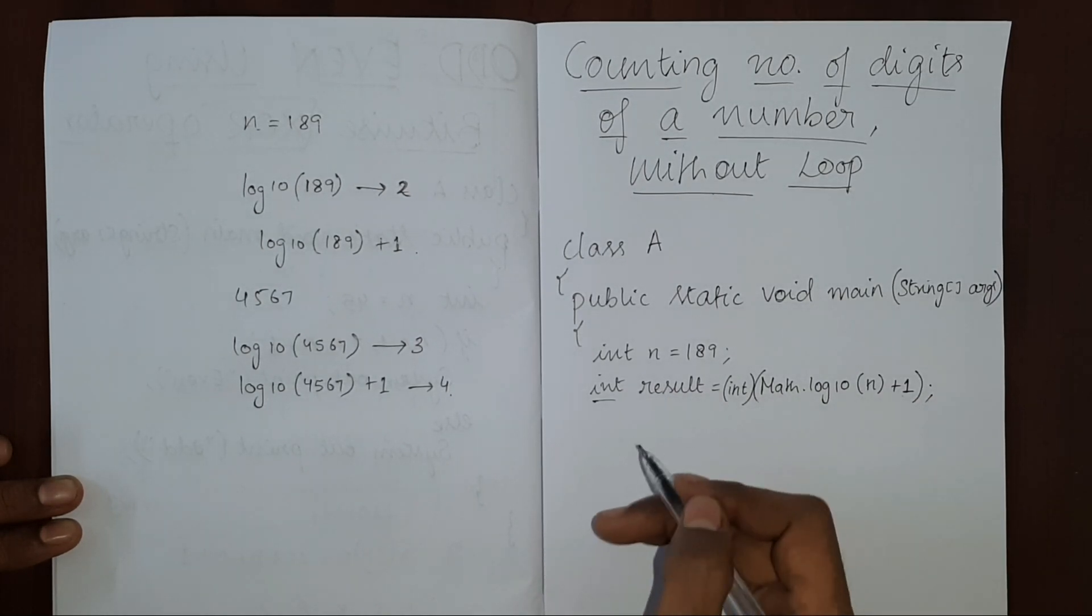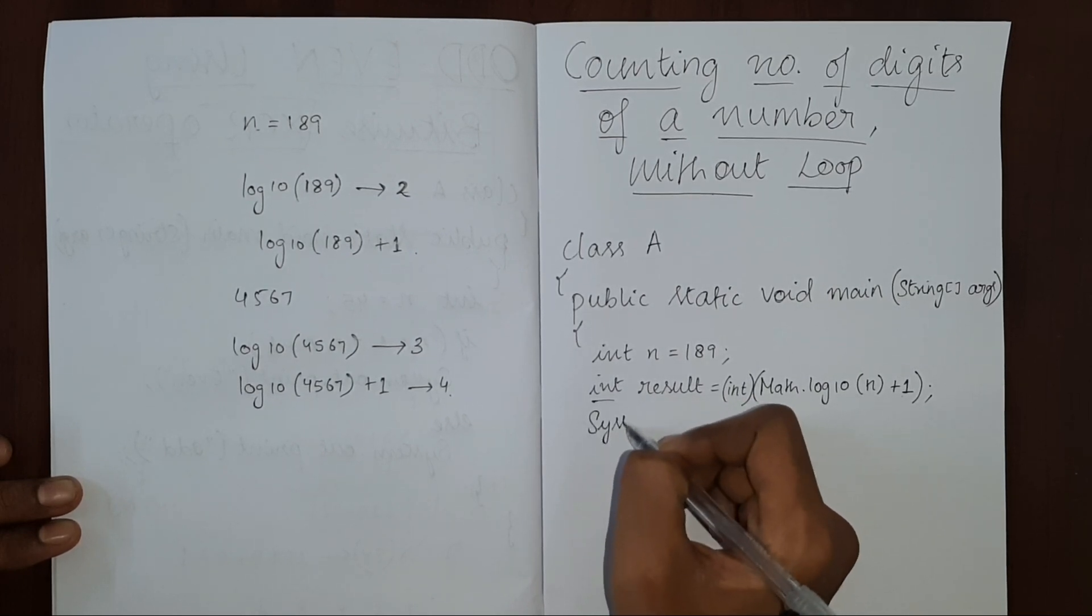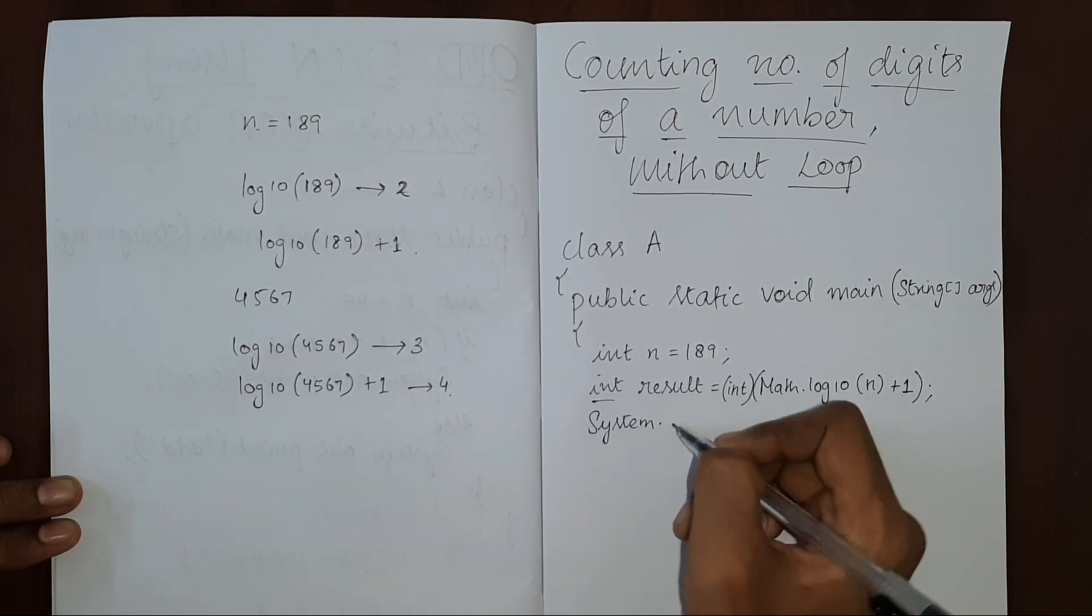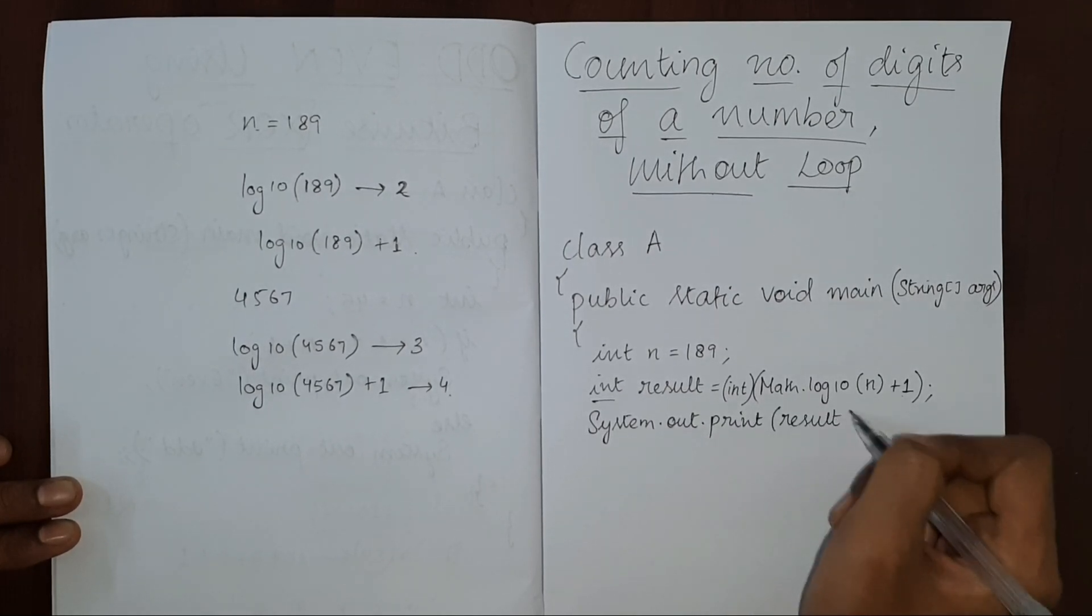Now this is one line code which will replace the entire while loop which we used to do to find the number of digits. So we'll just print it. And that's it.